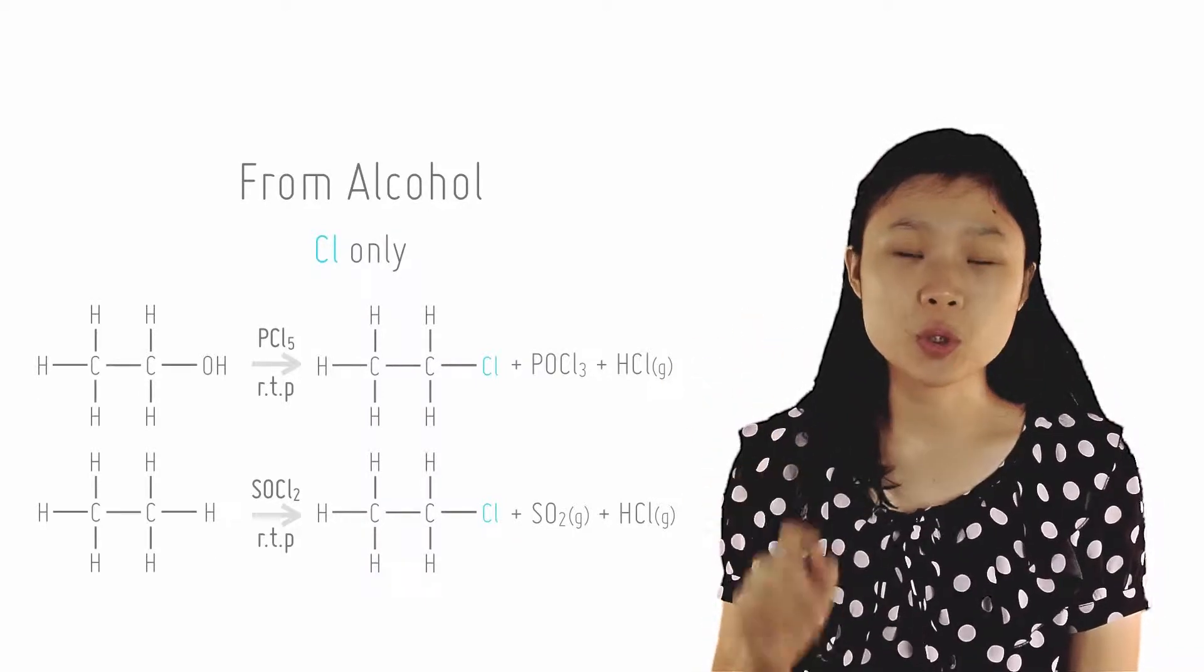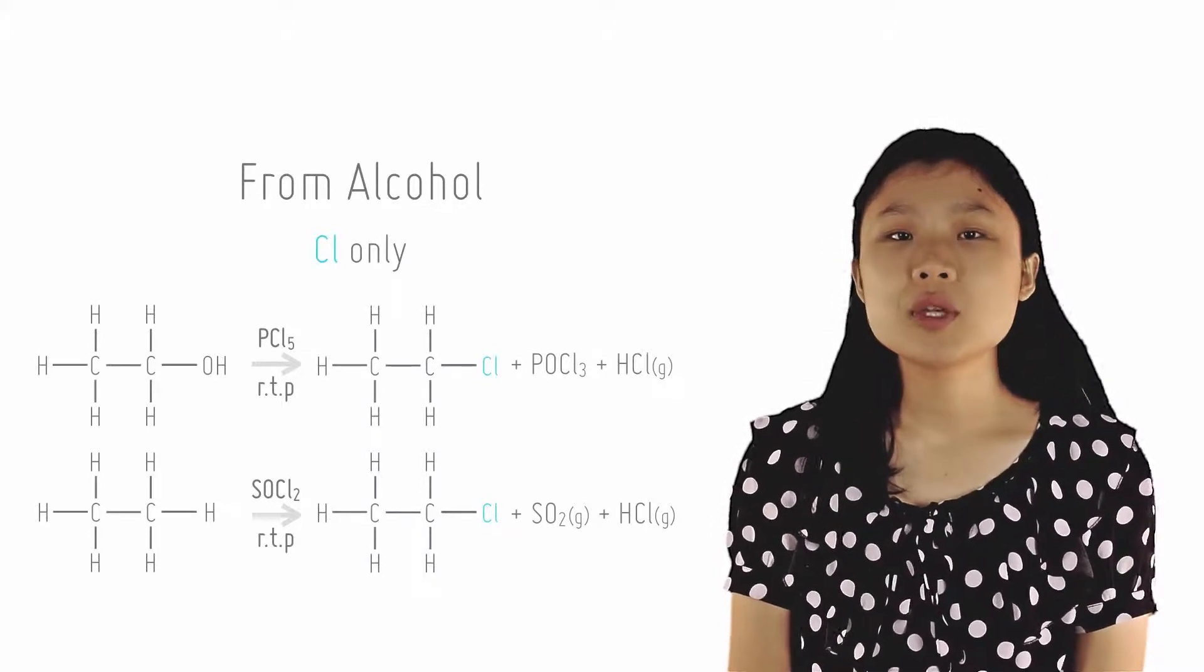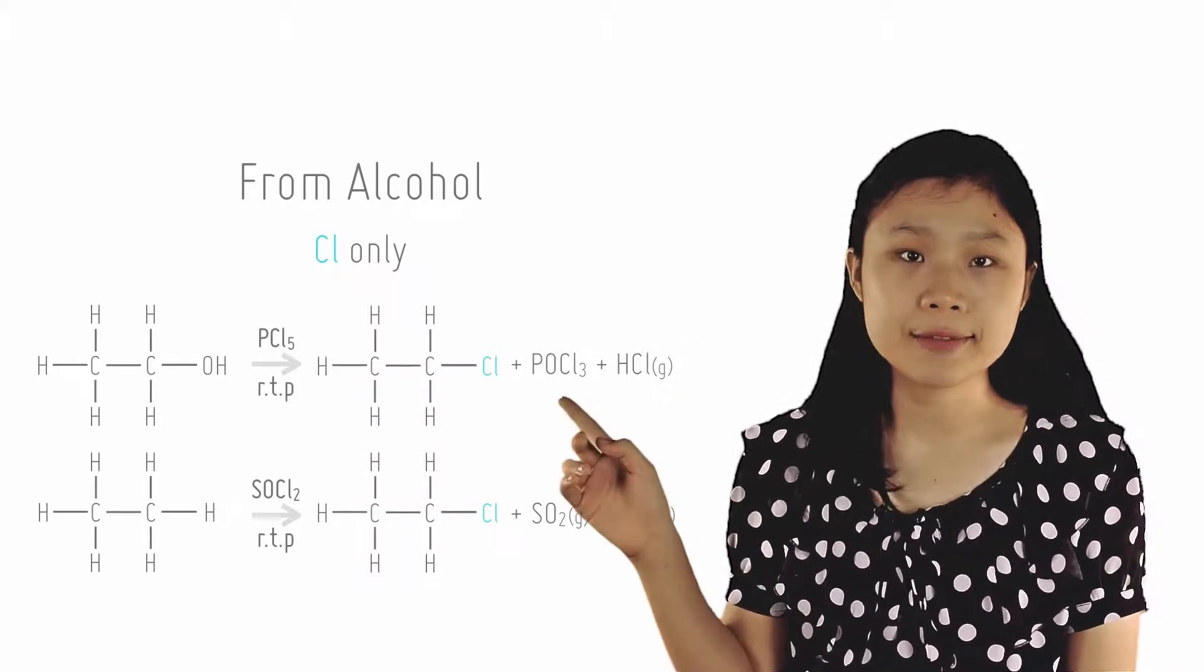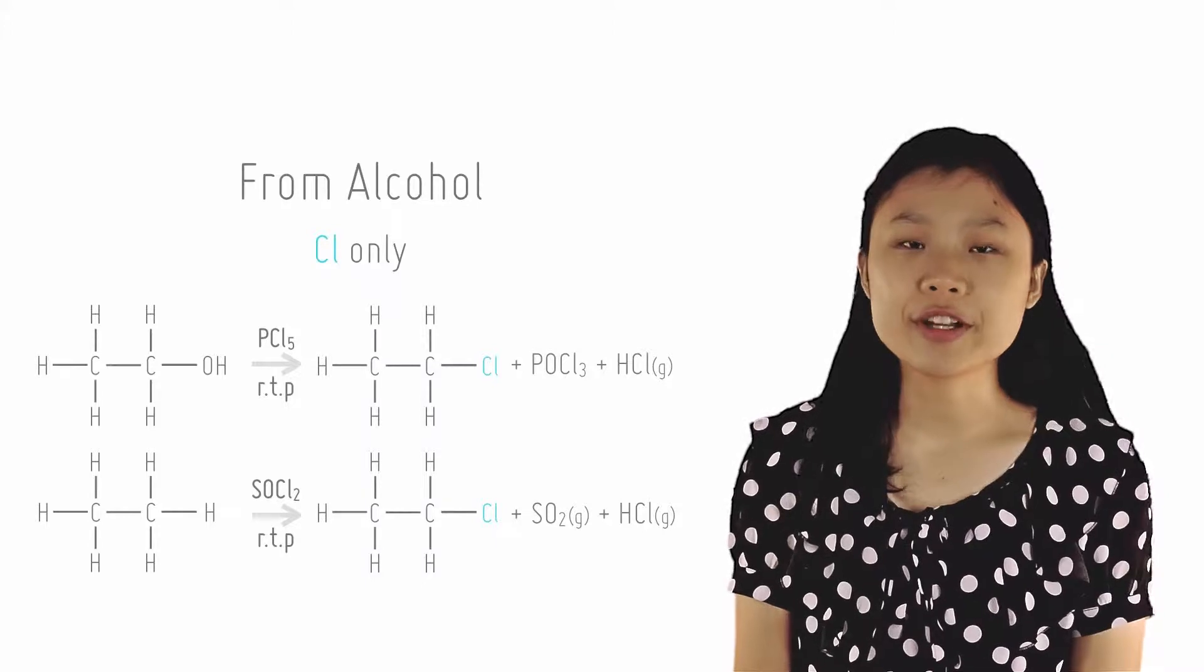There are two reagents specific to chlorine: PCl5 and SOCl2. Using PCl5 at room temperature with an alcohol will yield a chloroalkane, POCl3, and HCl, which is liberated as white fumes.